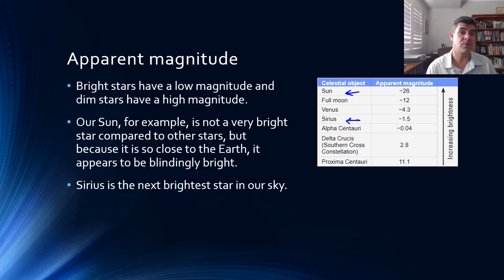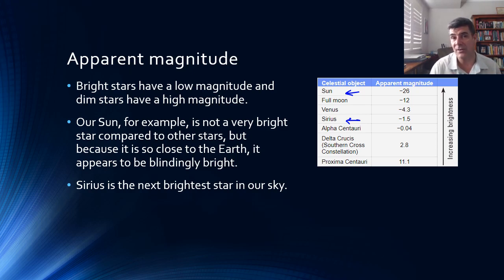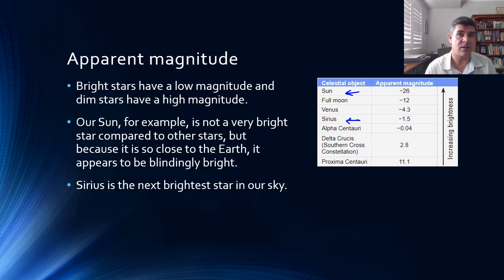Now this is fine — it's good to have an idea about how things appear — but how things appear is not necessarily how they actually are. So we also needed another scale in order to try and give us a sense of how bright stars actually were.